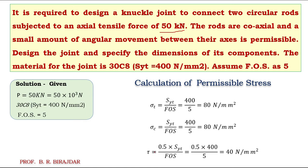...the shear stress is always half of the tensile stress, so τ = 0.5 × Syt / FOS = 0.5 × 400 / 5 = 40 newton per mm square. So the permissible stresses are: tensile = 80 N/mm², crushing = 80 N/mm², and shear = 40 N/mm². When designing, we use these permissible stresses.